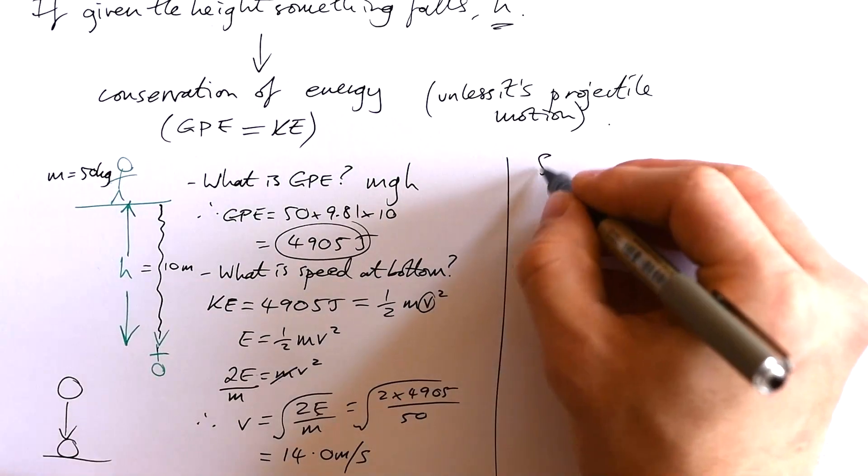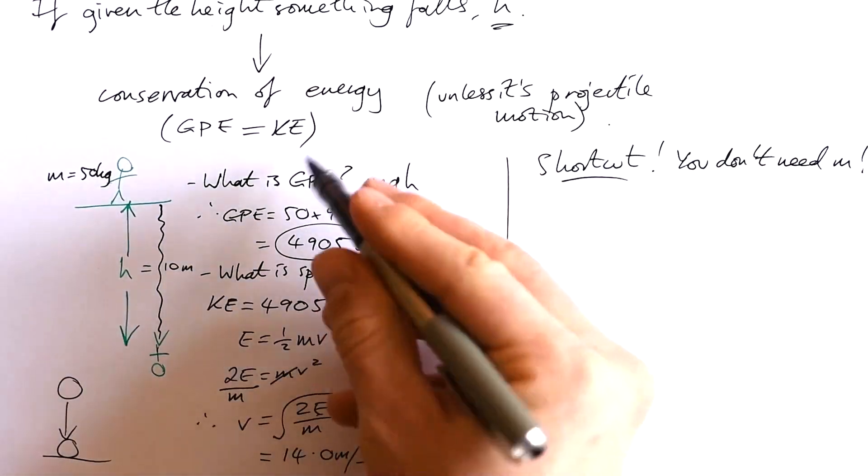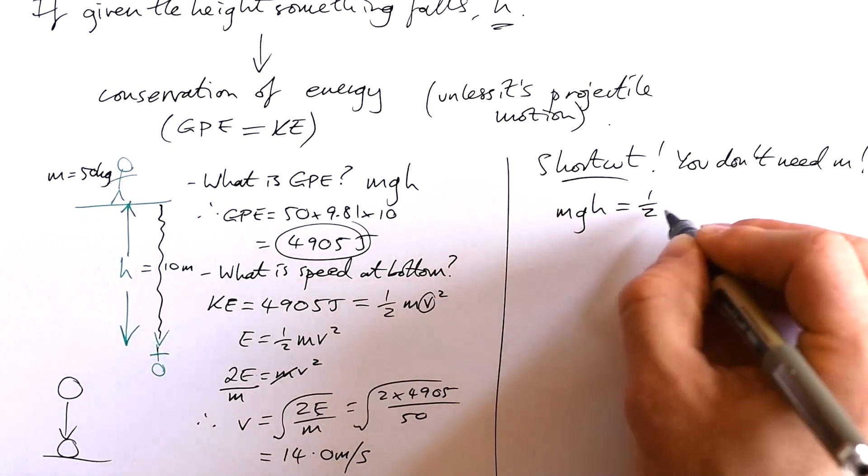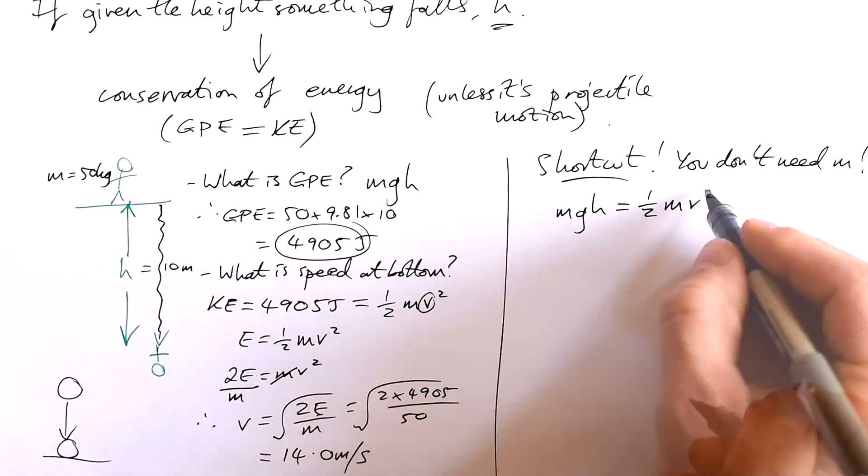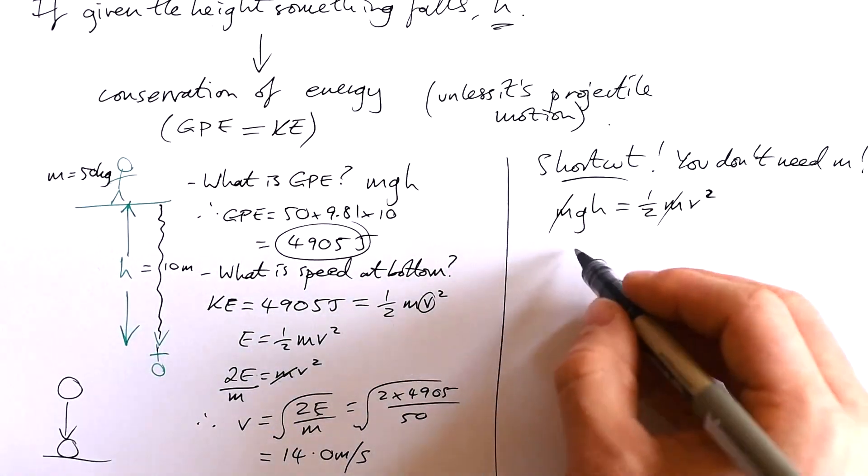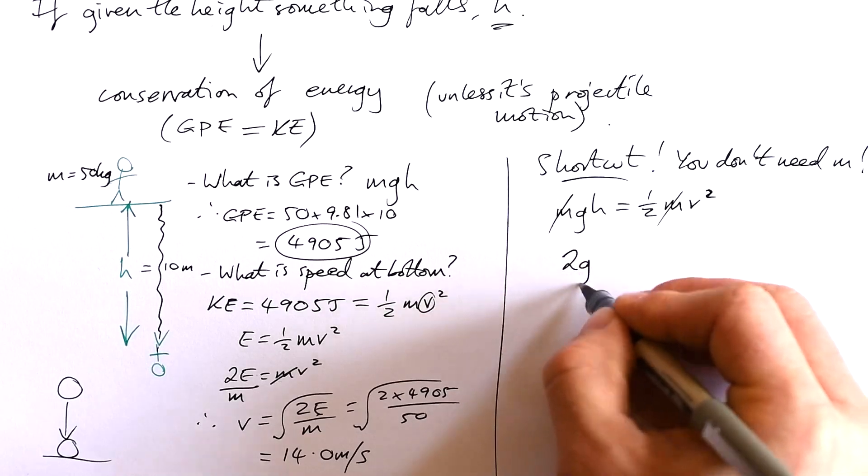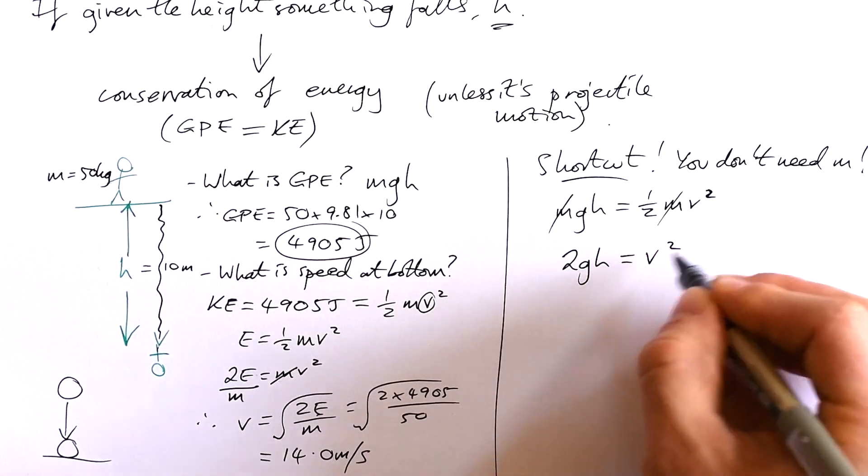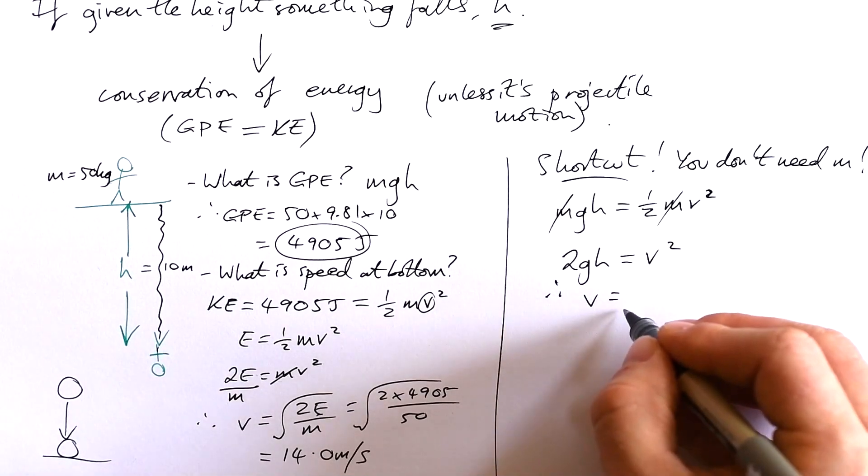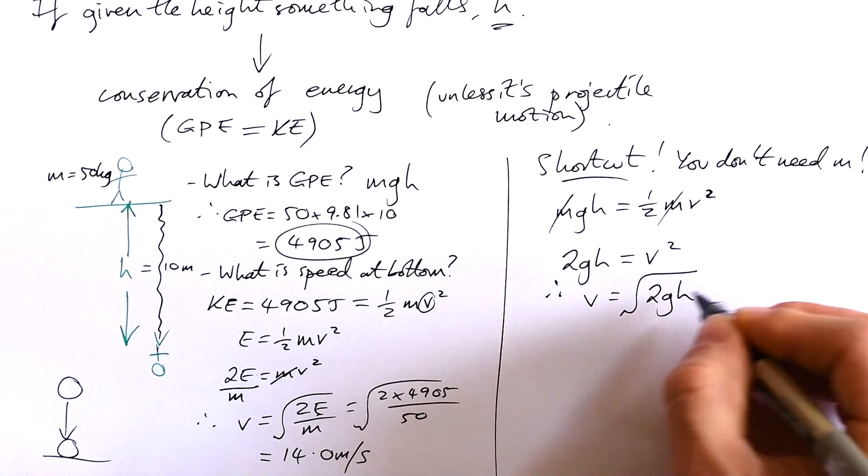But there is a shortcut. If you want to find the speed, you don't need the mass. If we know that GPE is going to be equal to KE, we can say that MGH is equal to half M V squared. What do we see in both? We see an M on both sides. Therefore, all we have to do is rearrange to find V again. Let's take the half over the other side: that's 2GH equal to V squared. Therefore, the speed is going to be equal to the square root of 2GH.